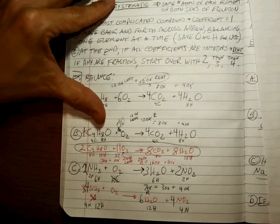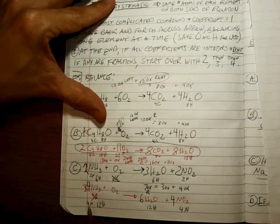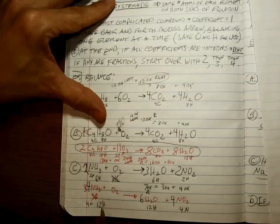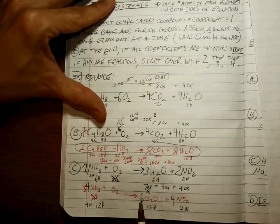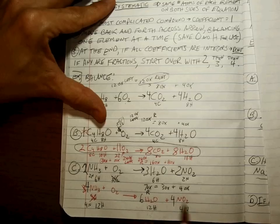4 NH3s leaves me with 4 nitrogens and 12 hydrogens. That 4 would give me 4 nitrogens. That 6 will give me 12 hydrogens. So let's add up all the oxygens on this side. 6 oxygens plus 4 times 2 or 8 oxygens, that's 14 oxygens on the right.